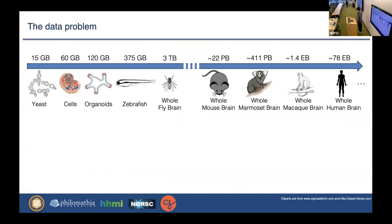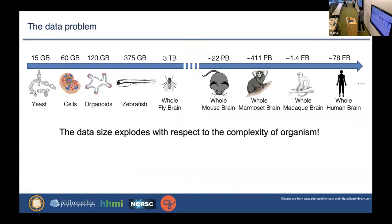However, as you can see here, the data sizes we are going to get will be drastically increased with respect to the complexity of the algorithm. Even the mouse brain will be about 22 petabytes of data, and for the human brain it will be actual exabyte scale. This raises a problem in data processing, because no existing software is available to process such large-scale data.